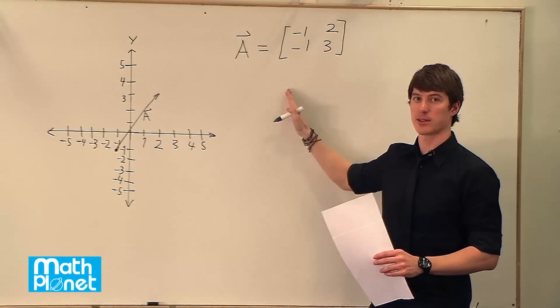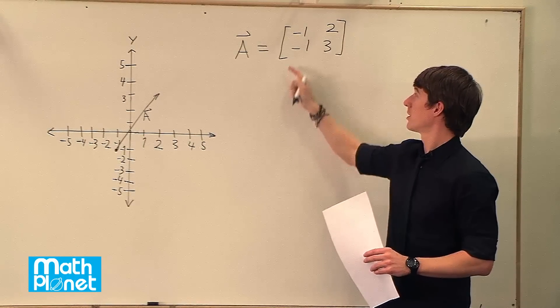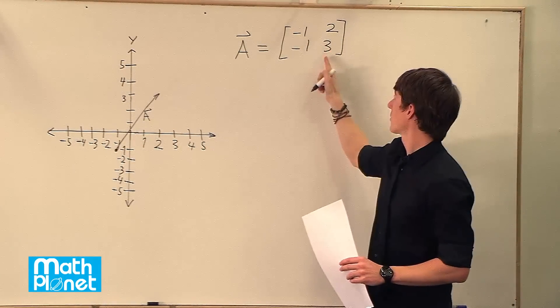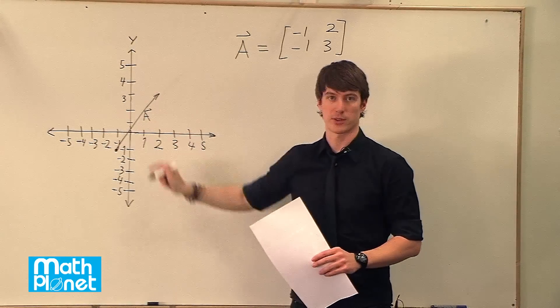Here we have some vector A, and we've written it in matrix form. So here we have the first point, negative 1, negative 1, and then the second point, 2, 3, and it's drawn graphically here.